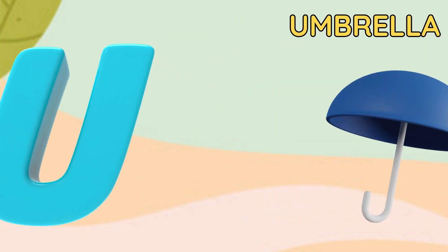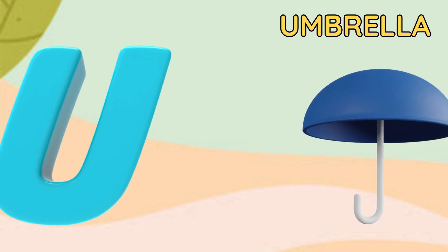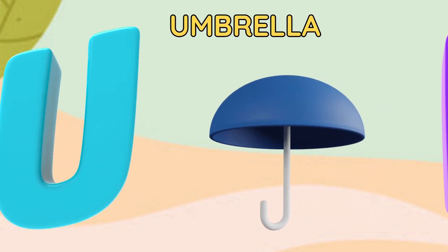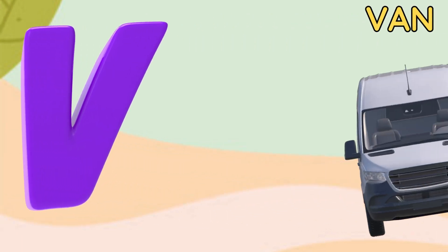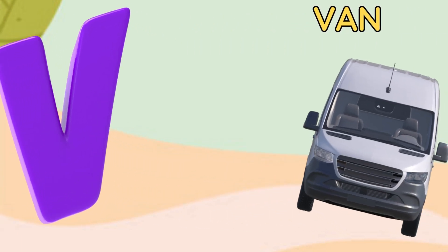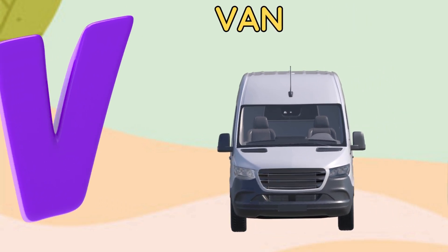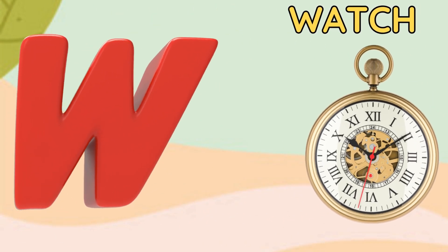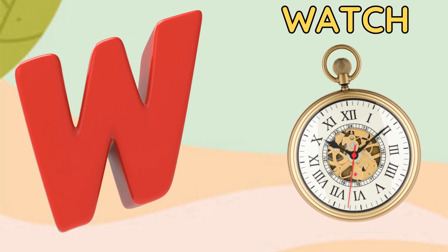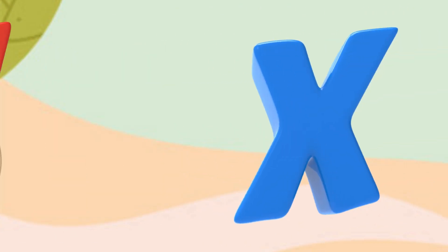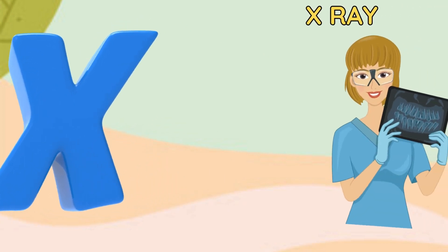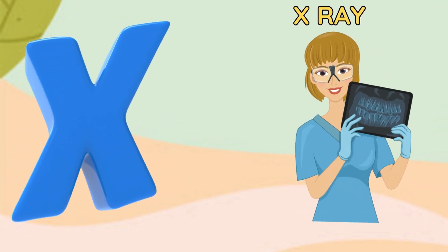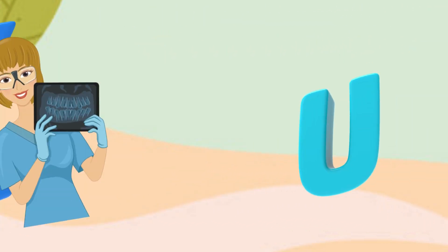U is for umbrella, a-a-umbrella. V is for van, f-f-van. W is for watch, w-w-watch. X is for x-ray, x-x-x-ray.